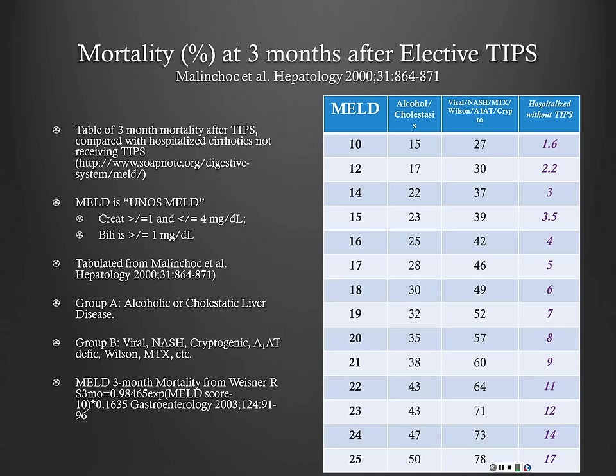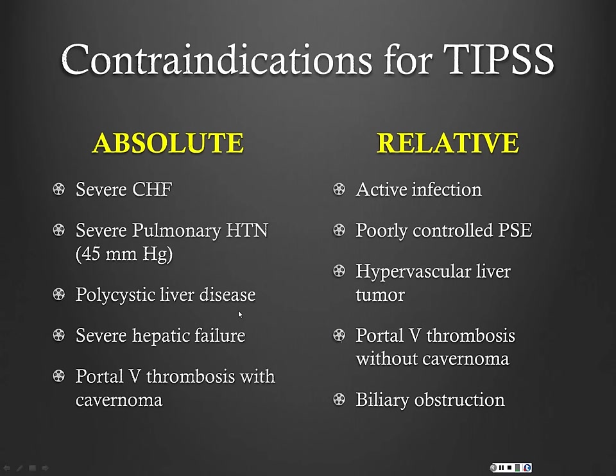When we talk about our threshold for TIPS in variceal bleeding or refractory ascites, we usually say about a MELD of 15. But if they have alcoholic cirrhosis, we may be able to push that up to about 18 to 20 and they still do okay. In general, as MELD increases, risk of mortality increases.